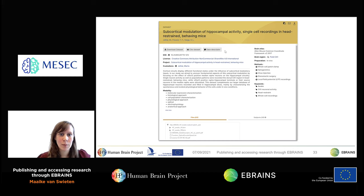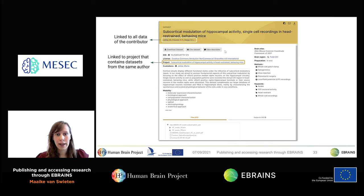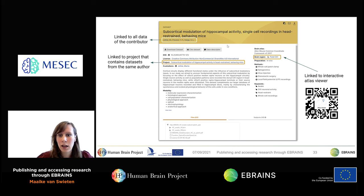Once you've found a dataset, you will be referred to a dataset card showing the title, list of authors, a persistent identifier DOI, and a license. If this dataset is part of a bigger project, that will also show up here. You can combine different research products — a computational model with software with a dataset. In this particular case, the dataset is linked to the Allen Mouse Brain Atlas and is anchored to the CA1 region of the brain, which can be viewed with the Atlas Viewer.